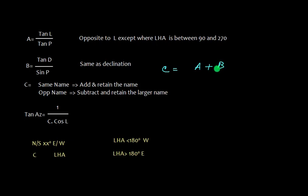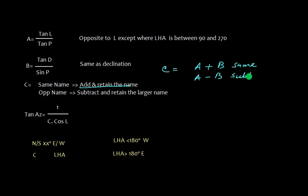To find C from A and B: if A and B are the same name, then add and retain the name. If they are of different name, then subtract and retain the larger name. Then we find tan azimuth, which is equal to 1 upon C times cos latitude.